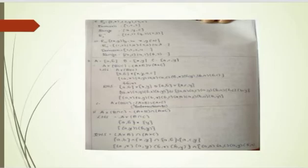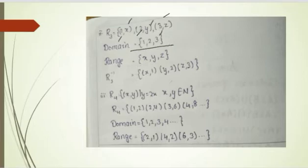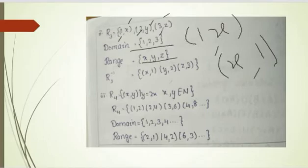Now for the next part: the relation is {(1,x), (2,x), (3,y)}. The domain — always the first digits — is {1, 2, 3}, and the range is {x, y}. For the inverse, we reverse each pair: (1,x) becomes (x,1); (2,y) becomes (y,2); (3,z) becomes (z,3).